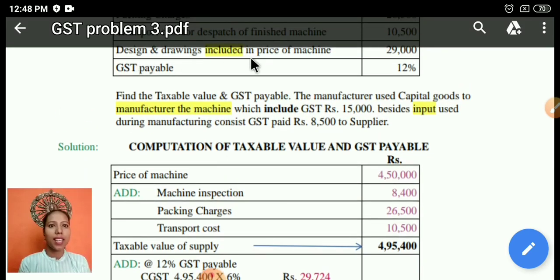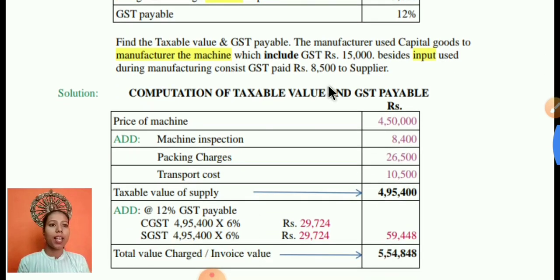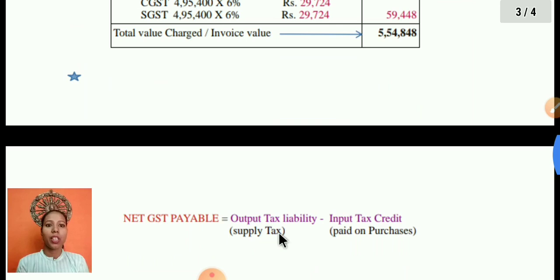We take the price of the machine including inspection, packing, and transportation, but not the designing and drawings since they are already included in the price. By adding these components, we get the taxable value of supply and apply the GST rate of twelve percent. The result gives us the invoice or bill value. The GST figure of 59,488 rupees is the output tax liability on the goods supplied.